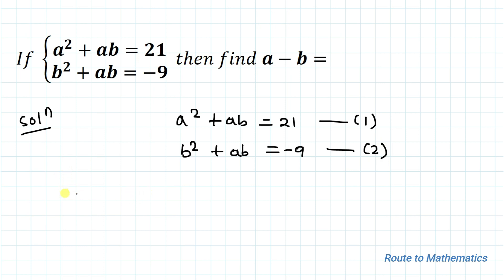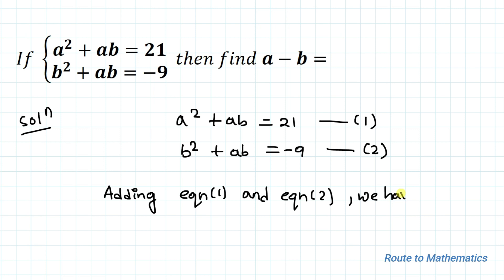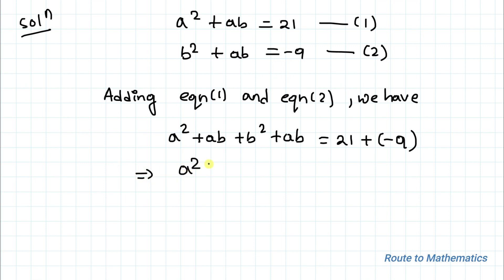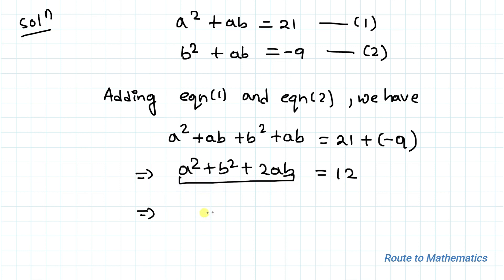In the next step, let's add equation 1 and equation 2. Adding them we get: a² + ab + b² + ab = 21 + (-9), which implies a² + b² + 2ab = 12. This is nothing but the algebraic identity of (a + b)², so we can write (a + b)² = 12.